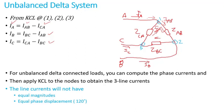For unbalanced delta connected loads, you can compute the phase currents and then apply KCL to the nodes to obtain the three line currents. What we will see through an example, the line currents, what I mean by line currents are these currents here I_A, I_B, I_C before they get into the delta.